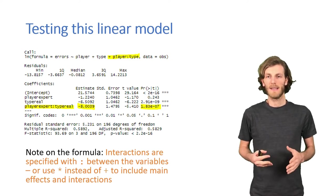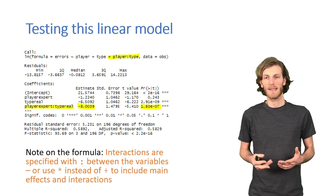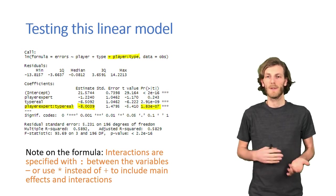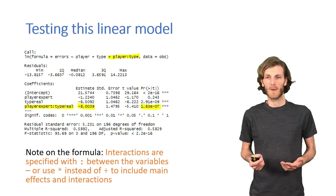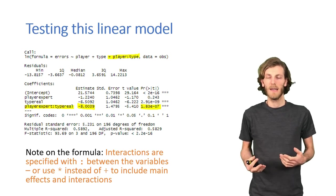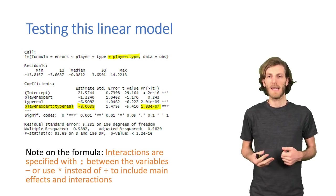So, I already said you can add an interaction with the colon operator between the two variables. Or you can use a shortcut and use the multiplication operator instead of the plus. So, then I only have player times type, and that gives me the two main effects and the interaction.